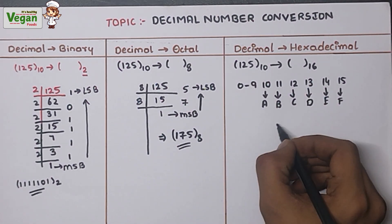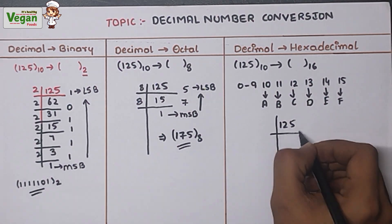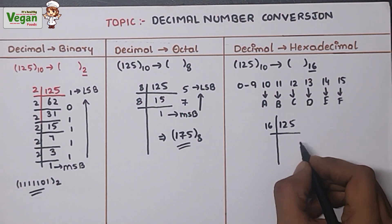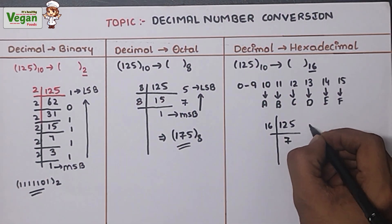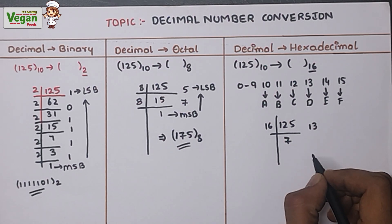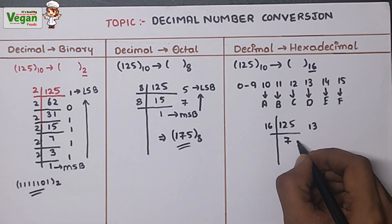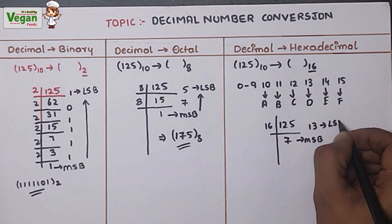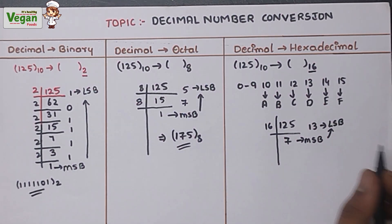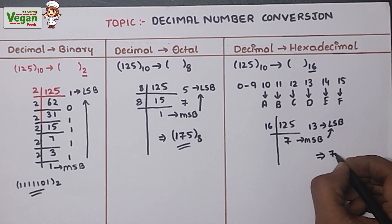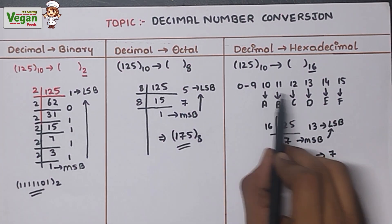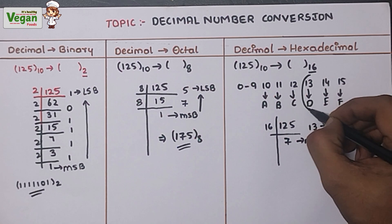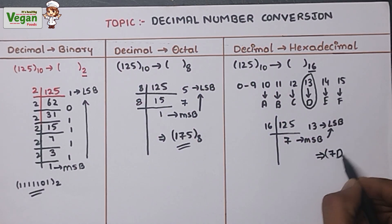To convert 125 to hexadecimal, divide by 16. 125 ÷ 16: 16×7=112, remainder 13. We cannot further divide 7 by 16, so we stop. Writing from most significant bit to least significant bit: 7 and 13. Since 13 is represented as D, the hexadecimal value is 7D base 16.